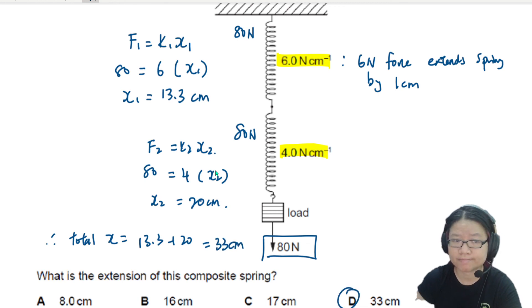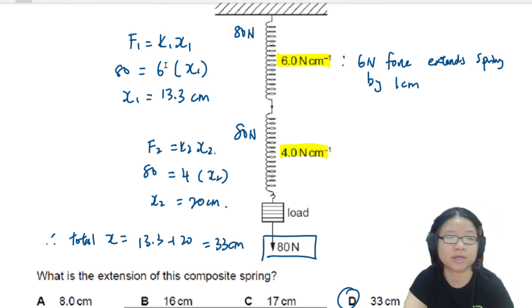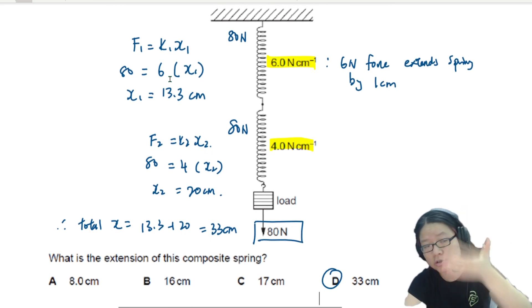So as long as you know the main idea where if springs or rods or materials are connected this way in series, one after the other, they both have to support the weight. And then from there on, you can continue to operate as usual.